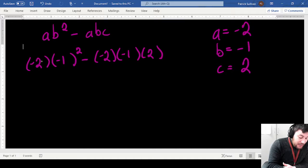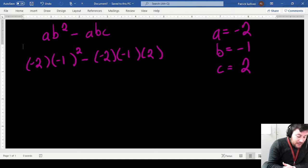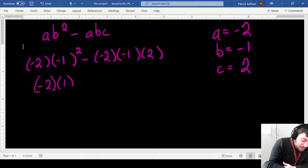Now again, you don't do the negative 2 times negative 1 first because you need to do exponents first. And negative 1 squared is positive 1, so I'm going to rewrite this as negative 2 times positive 1,